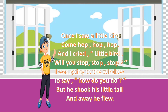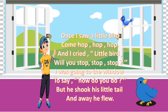Children, let's recite this poem again. Once I saw a little bird come hop, hop, hop. And I cried, little bird, will you stop, stop, stop? I was going to the window to say, 'How do you do?' But he shook his little tail, and away he flew.